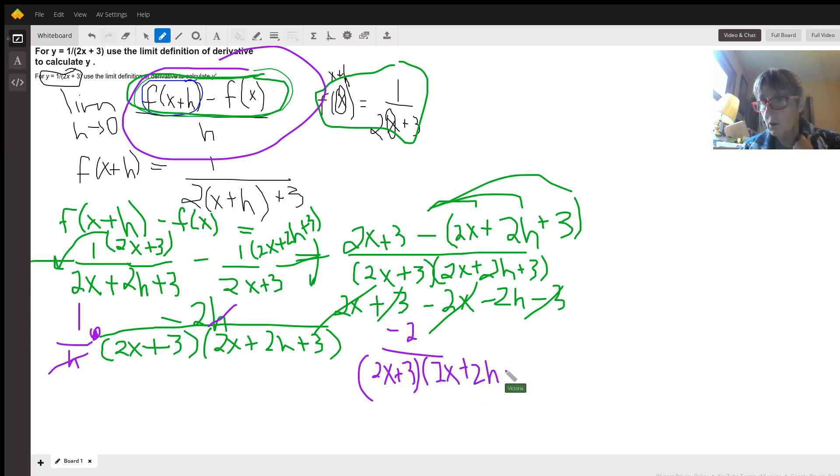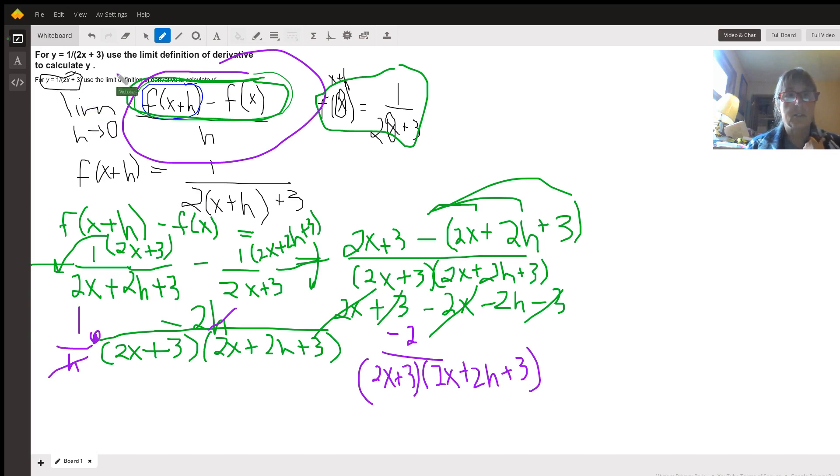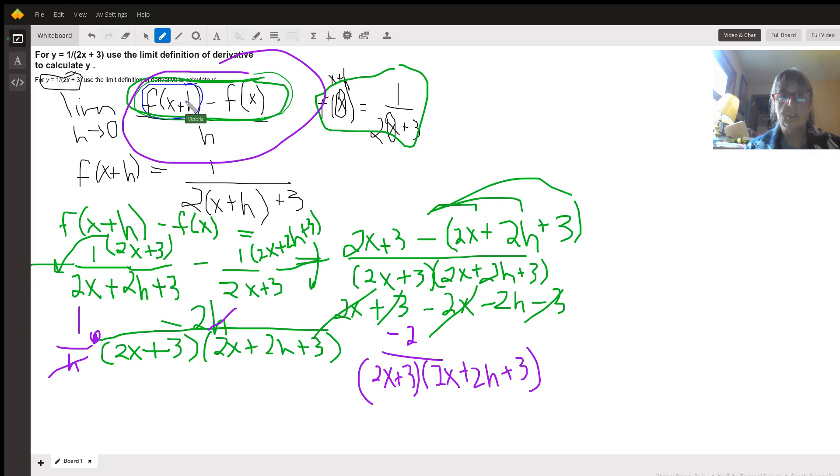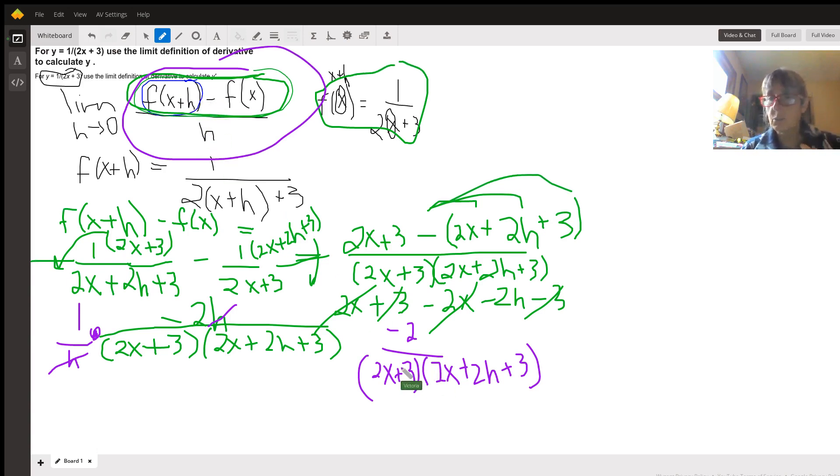And now all that's left is to take the limit. So notice we did this first. We subtracted the original, simplified, multiplied by 1 over h, which is dividing by h, and simplified that. And the last thing we're going to do is take the limit of this as h approaches